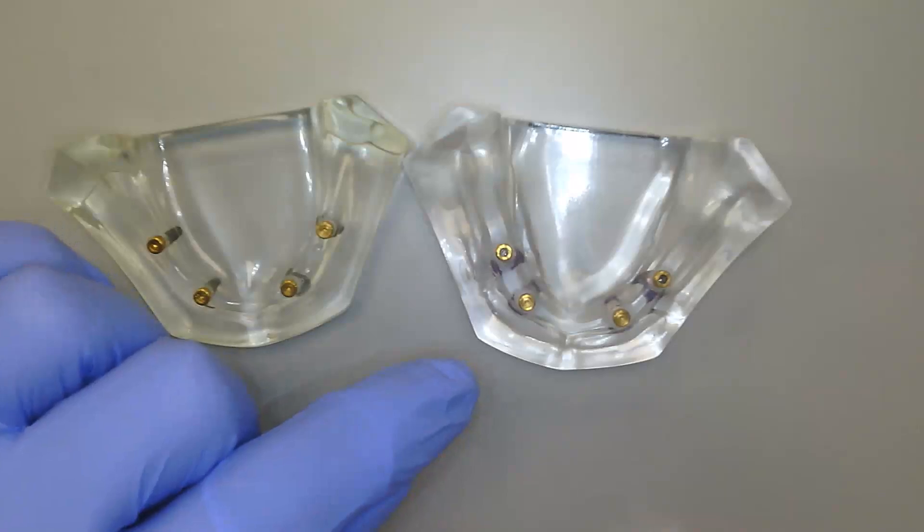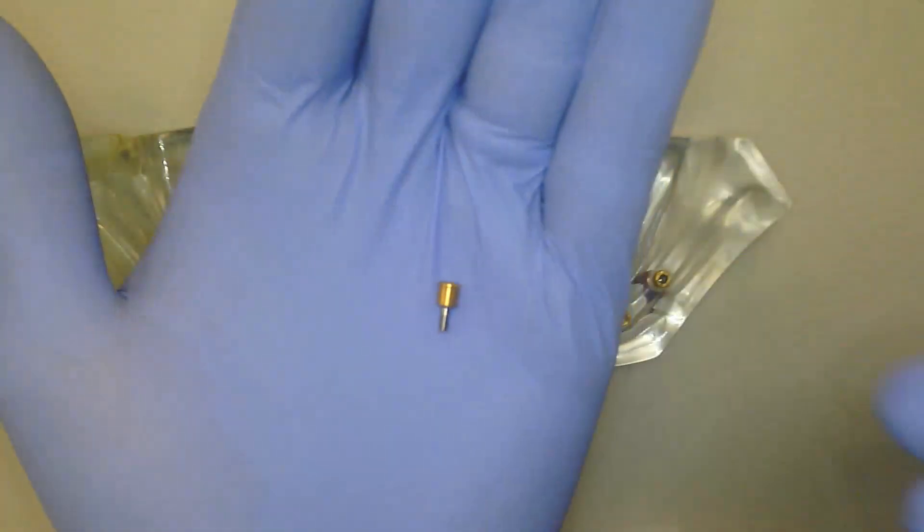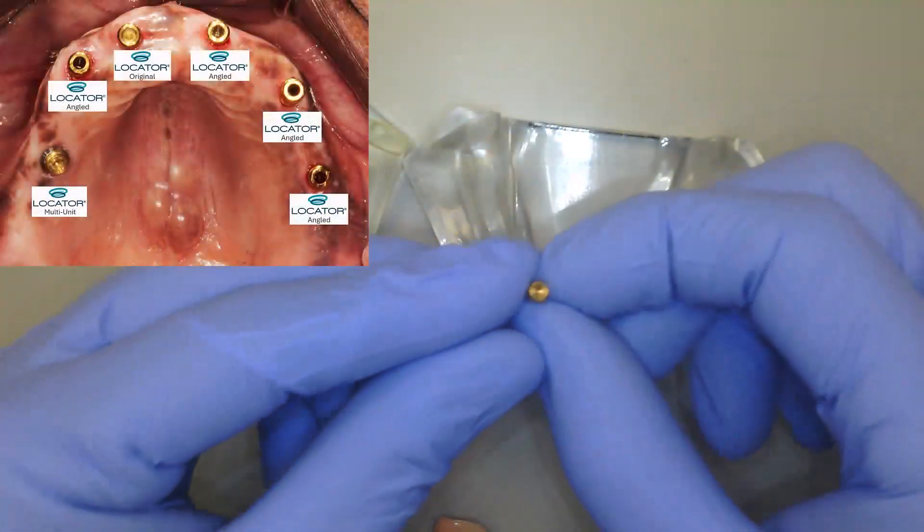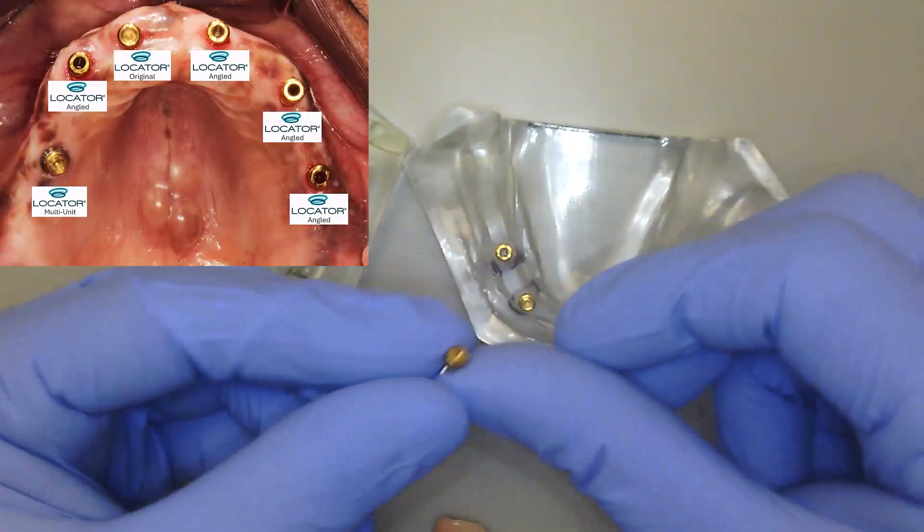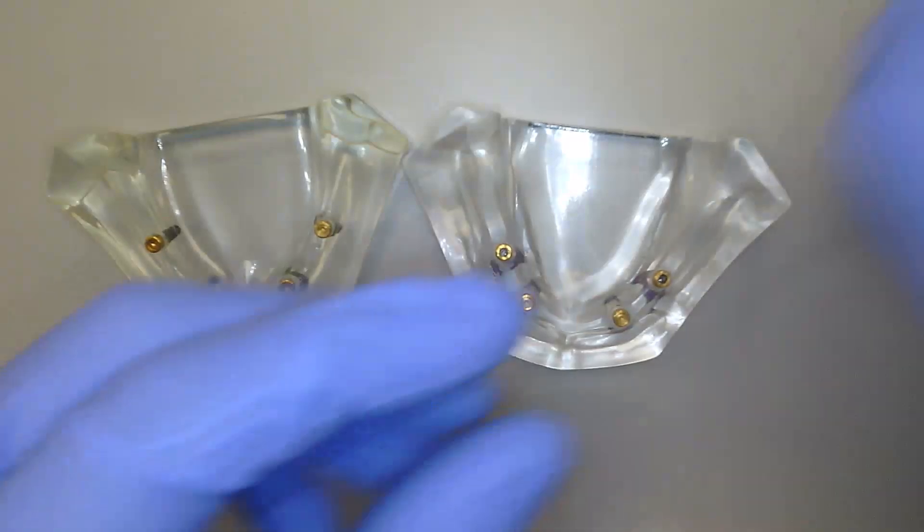The locator versus the locator angled abutment is going to be looking like this. So this is my standard locator abutment, and when I take a look at it here, we'll see that we've got that triangular appearance as well as the gold abutment.